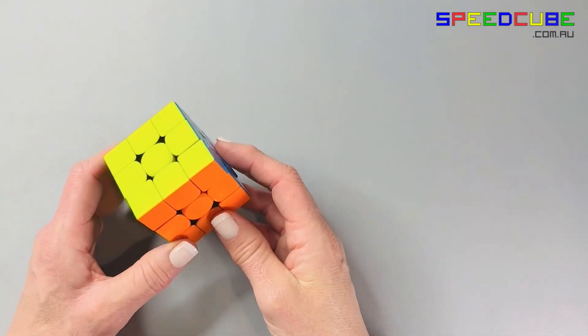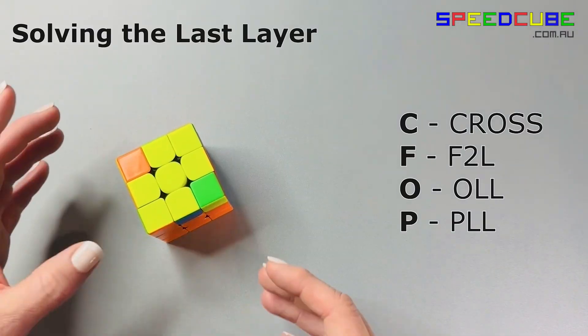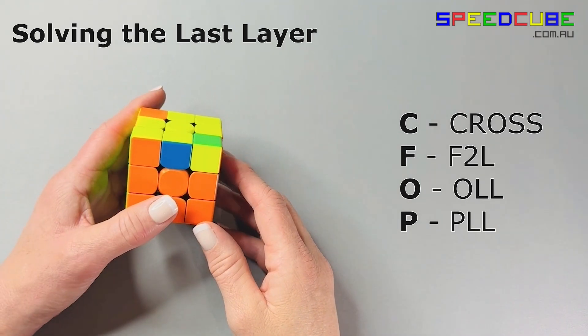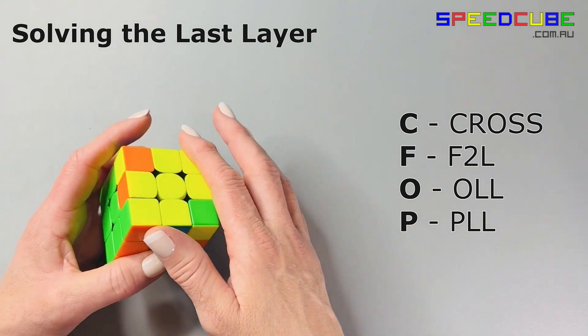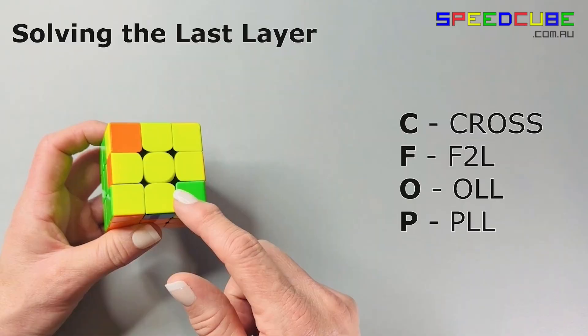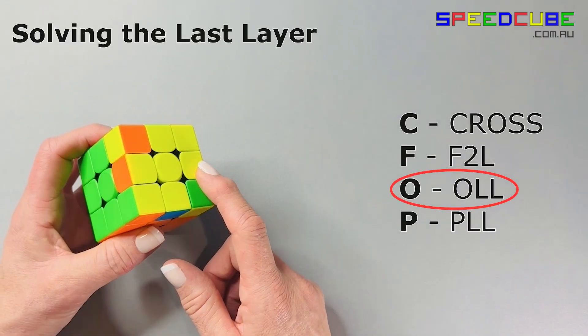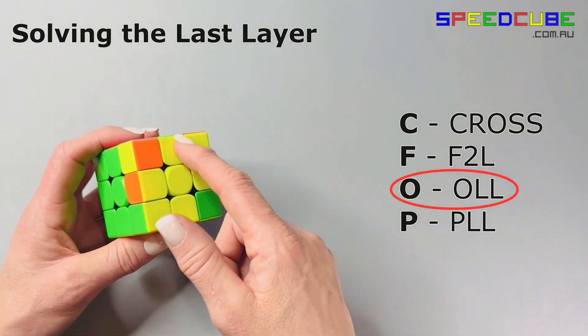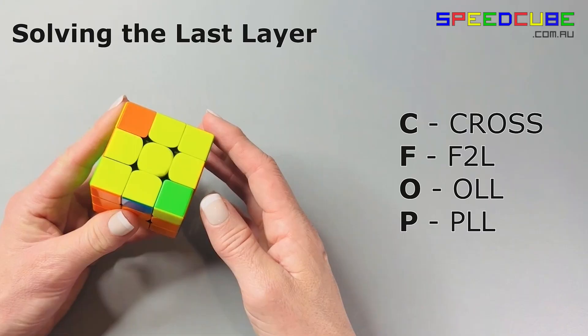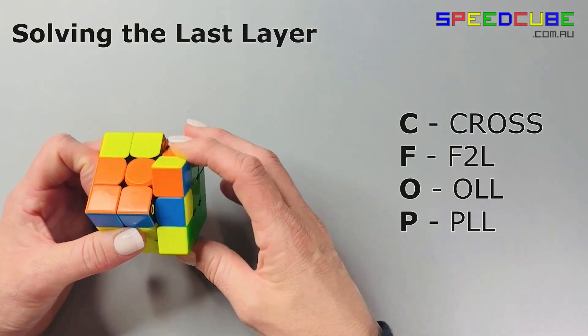So that solves the last layer. This intermediate method gives you the ability to move on to speed solving using CFOP. This is where you learn an algorithm to orientate the last layer in one or maybe two steps. So here we've got this pattern and we've done one algorithm only to orientate the whole last layer.